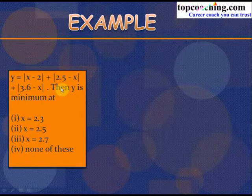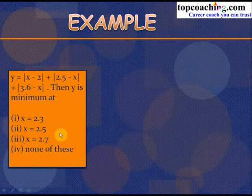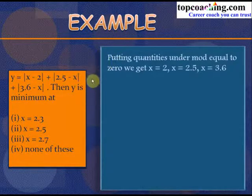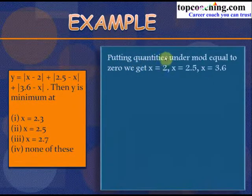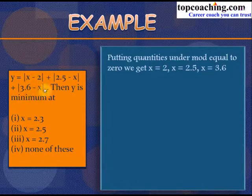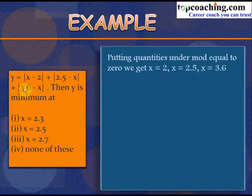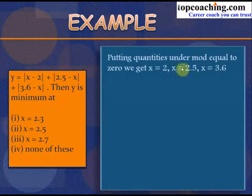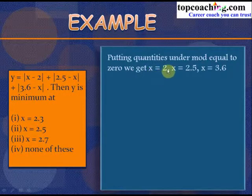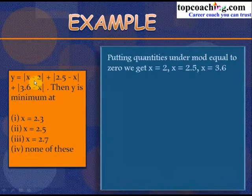Equating quantities under modulus to zero: x − 2 = 0 gives x = 2; 2.5 − x = 0 gives x = 2.5; and 3.6 − x = 0 gives x = 3.6. The coefficient of x in each term is unity. By the coaching funda, the minimum value of y occurs at one of these three points, so we substitute each value.